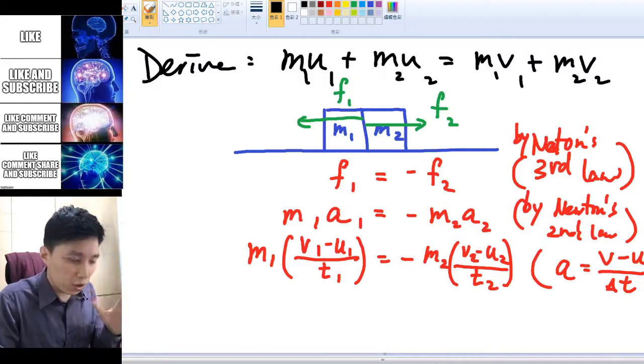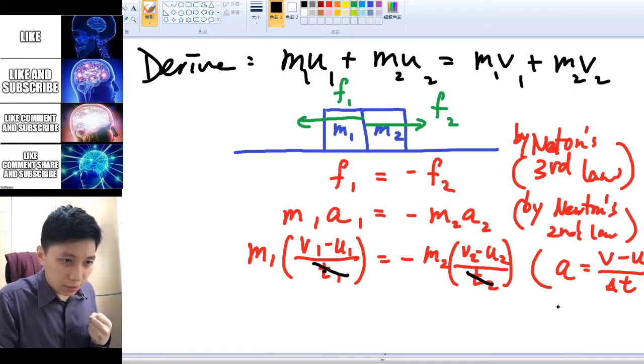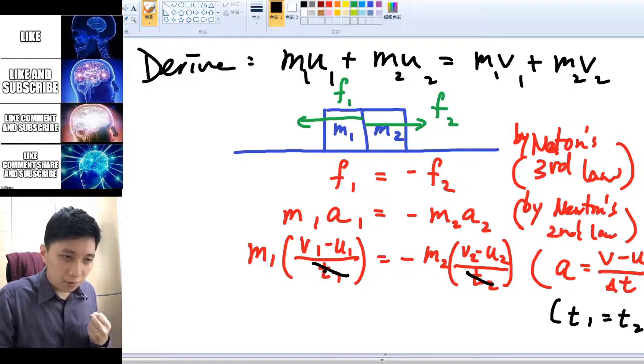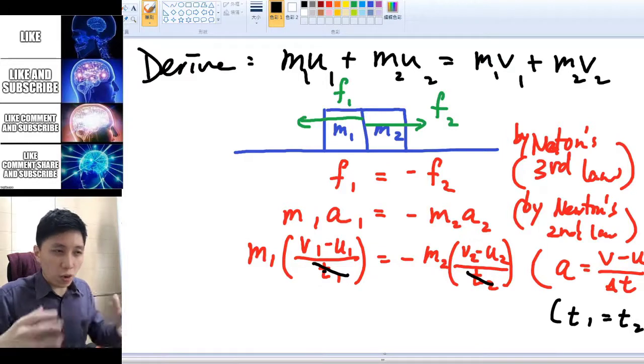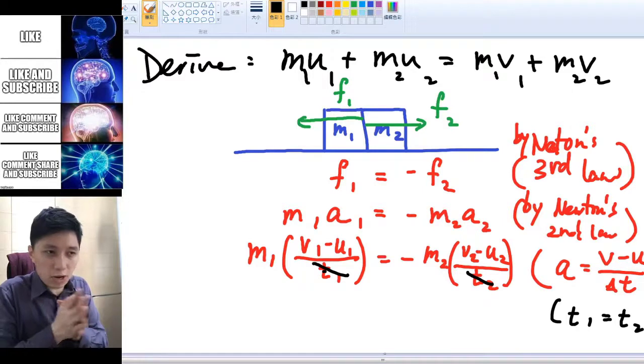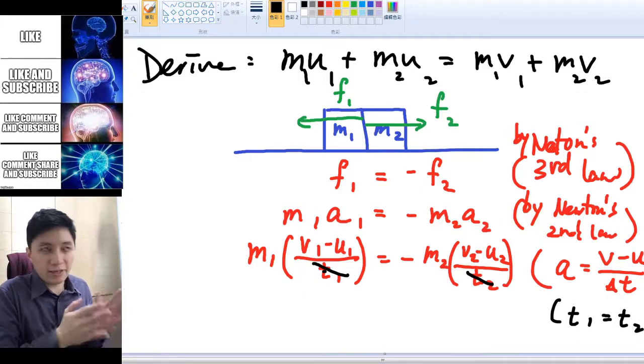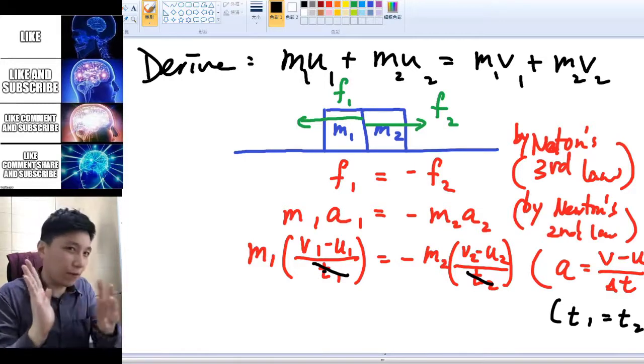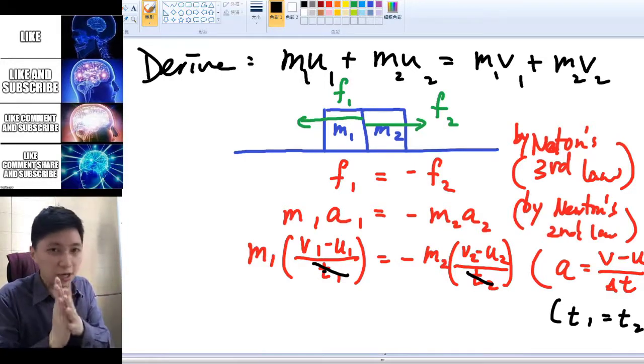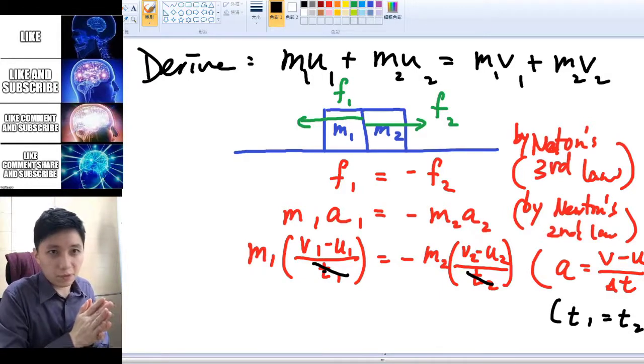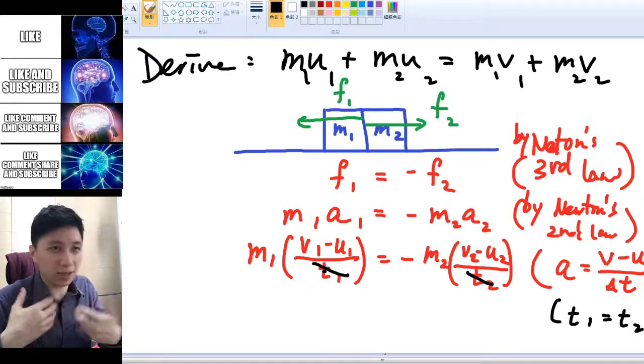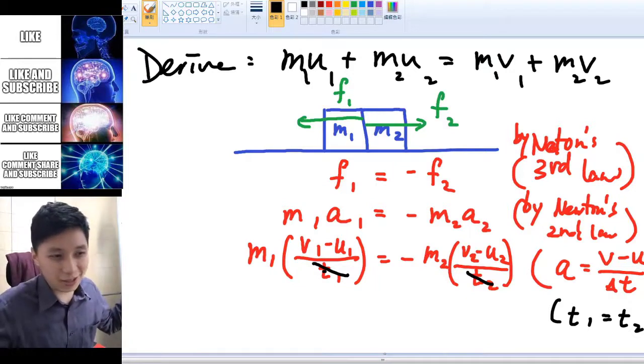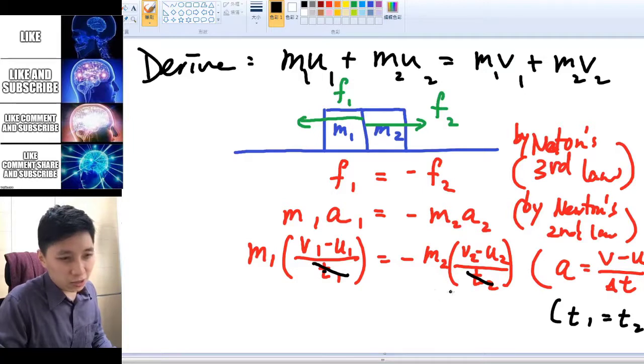Okay, in fact you should realize that t₁ and t₂ should be the same, because think about there's no way that m₁ will be touching m₂ while m₂ is not touching m₁, right? Like if, think about if I slam you in the face, then my hand and your face must be touching each other with the same amount of time, right? There's no way your face touching my hand more than my hand touching your face. I mean, this is two ways, right? So yeah, t₁ and t₂ will be the same.